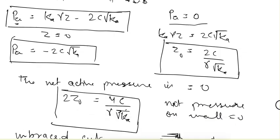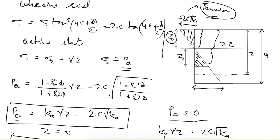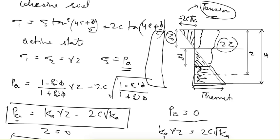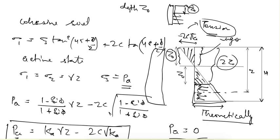Now if we want to design the wall in the case of cohesive soil, the net pressure in depth 2z0 is zero, meaning only pressure below this zone is applied on the wall. Theoretically that is true, but in reality, since the soil is in tension up to depth z0, the soil loses contact with the wall. So it applies no pressure in that zone, and for design we ignore this part — we ignore the depth z0.